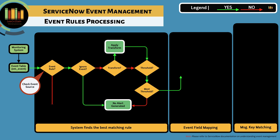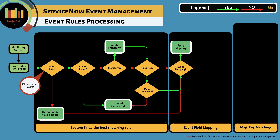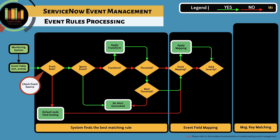If no event rules match, default binding occurs using the node information to find a matching configuration item using host name, IP, or MAC address, and the processing further continues. Field mapping and severity validation occurs after that. It is always recommended that you bind the alert to a specific CI for root cause analysis.